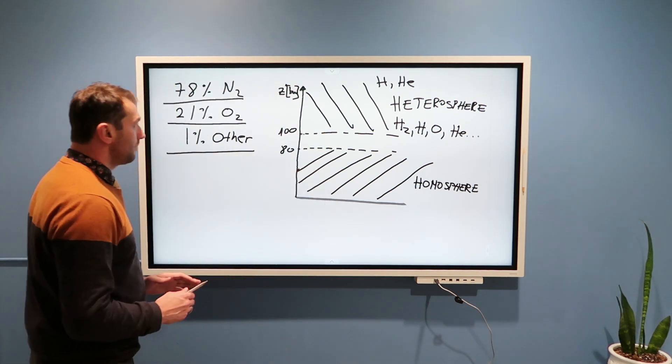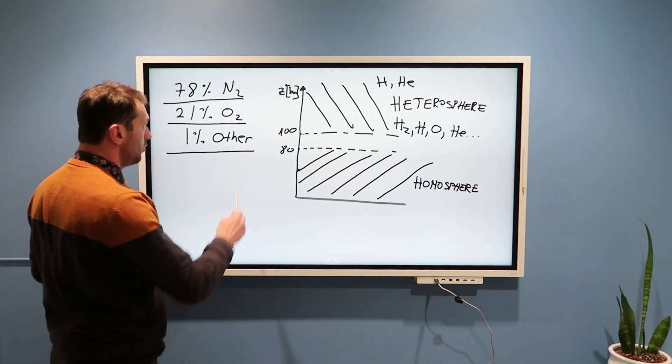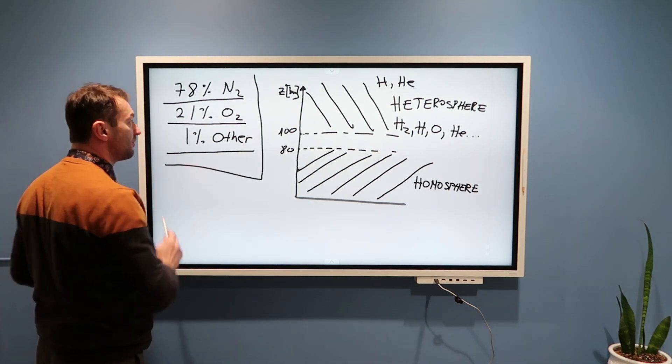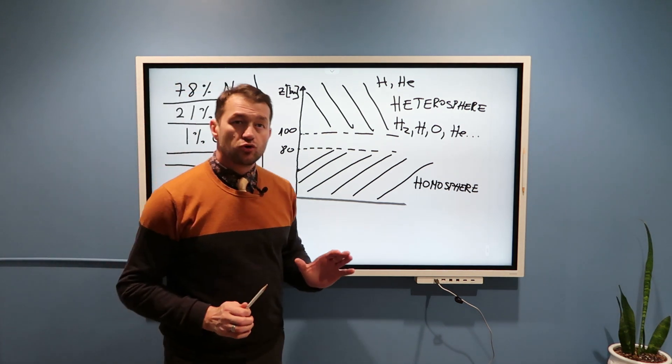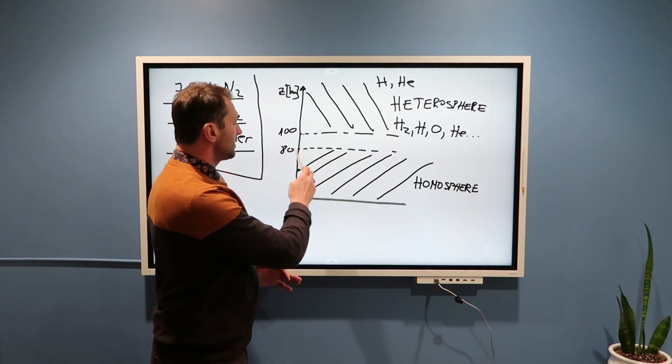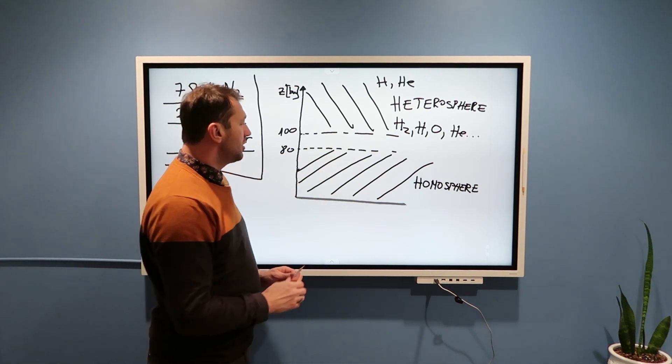So when people, including me, tell you that this is the composition of air, that is really true, but only in the first approximately 80 to 100 kilometers.